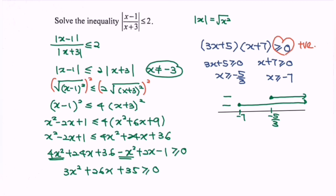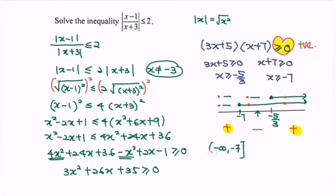The sign analysis gives: negative times negative equals positive, then negative times positive equals negative, and positive times positive equals positive. Referring to the positive sign regions and remembering the restriction x cannot equal negative 3, with negative 3 marked on the number line, our final answer is negative infinity until negative 7, union from negative 5 over 3 until infinity.